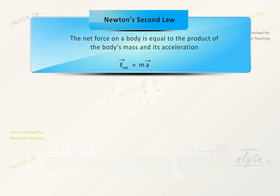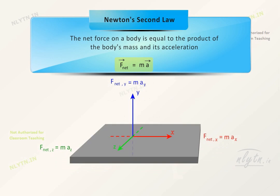We can write this equation into the component form to have this equation along each axis. These equations tell us that a force along any axis is equal to the product of the mass of the body and its acceleration along that axis only.